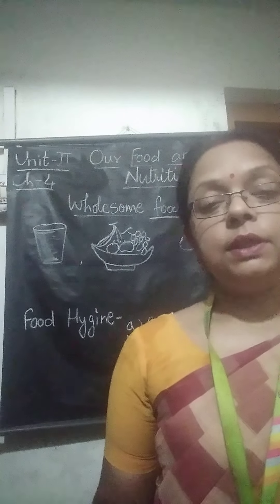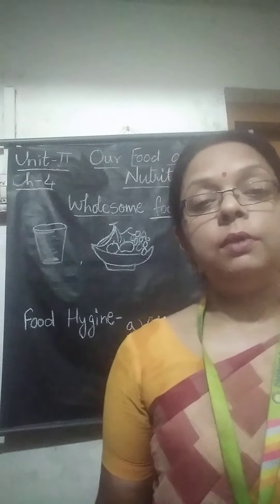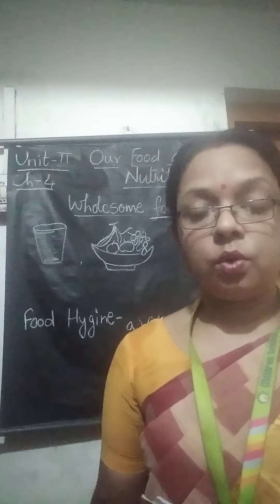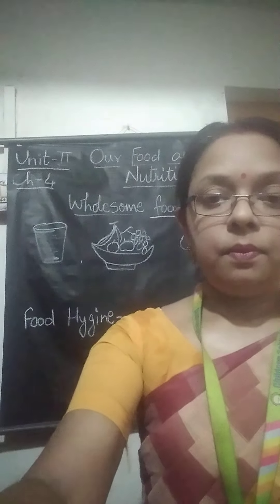For example, milk. Milk mein kya hota hai? Bacteria sabse jaldi form karta hai. Agar hum milk ko thande place mein ya fridge mein nahi rakhte hain, to milk jaldi kharaab ho jaayega. Isliye bacteria kam se kam form ho, hamko milk ko thande place mein hi rakhna chahiye. Ya agar hum bahar rakhte hain, to hamein usko kai baar boil karna chahiye, jisse ki uska bacteria khatam ho jaaye.